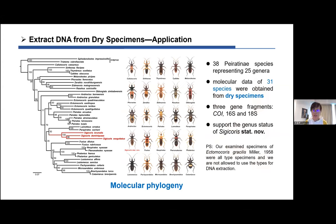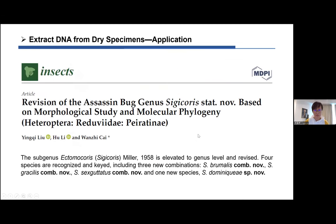We used 38 species representing 25 genera, with molecular data from 31 species all obtained from dry specimens. To maintain consistency since we couldn't get every species' sequences, only three markers were chosen: CO1, 16S, and 18S. Our examined specimens of one species were all type specimens, so to protect them we didn't extract from types — only the other three species were included. They grouped together and were distant from Ectomocorus and Brachysandalus branches on the tree, suggesting a separate genus. Thus, the subgenus Citychorus was elevated to genus level, with four species recognized including three new combinations and one new species.